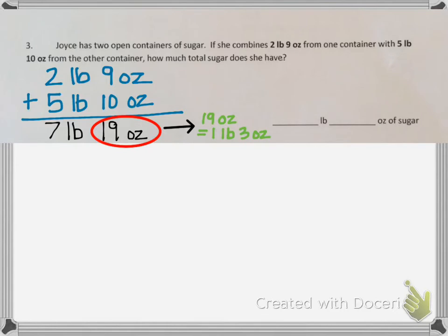So what we want to do is regroup. We want to take that pound, the one copy of 1 pound that is in 19 ounces, and we want to combine it with the 7 pounds. So I'm going to add 1 pound to the 7 pounds.